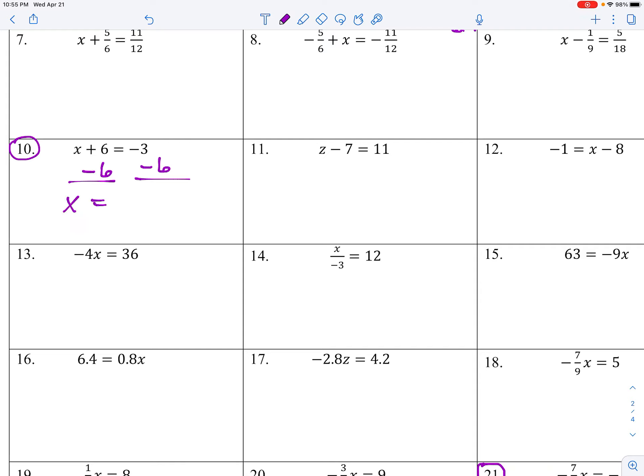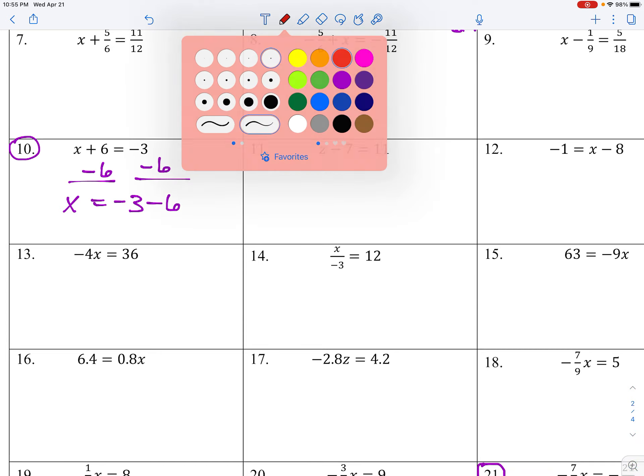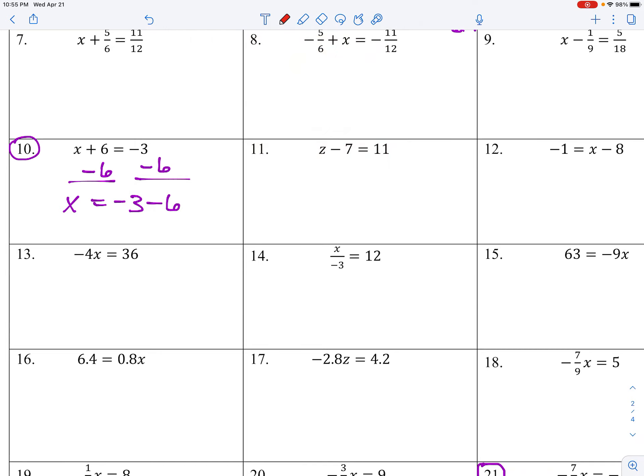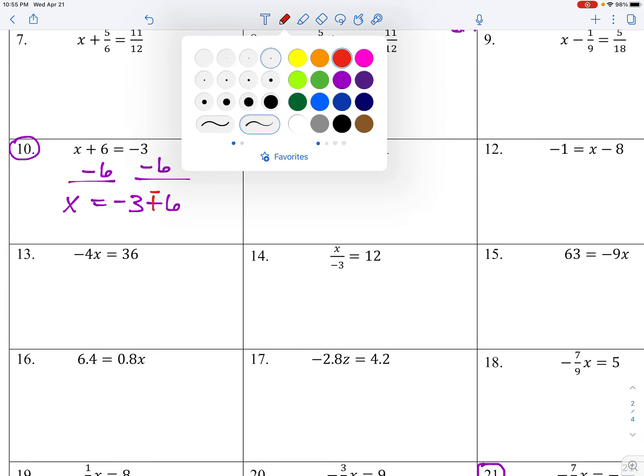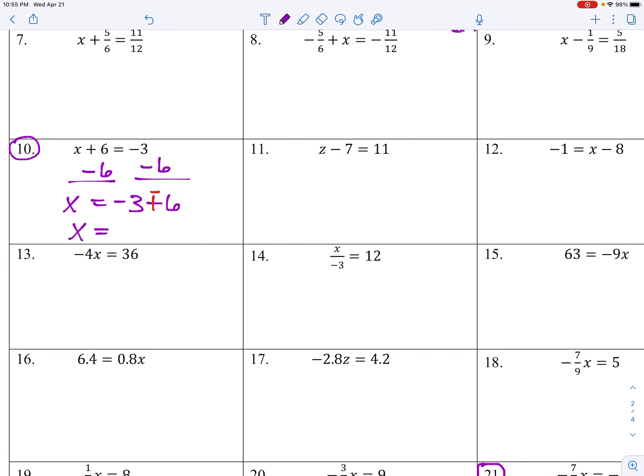x is equal to negative three minus six. To subtract is to add the opposite. So I think of negative three minus six as negative three plus negative six. That means x is equal to negative nine.